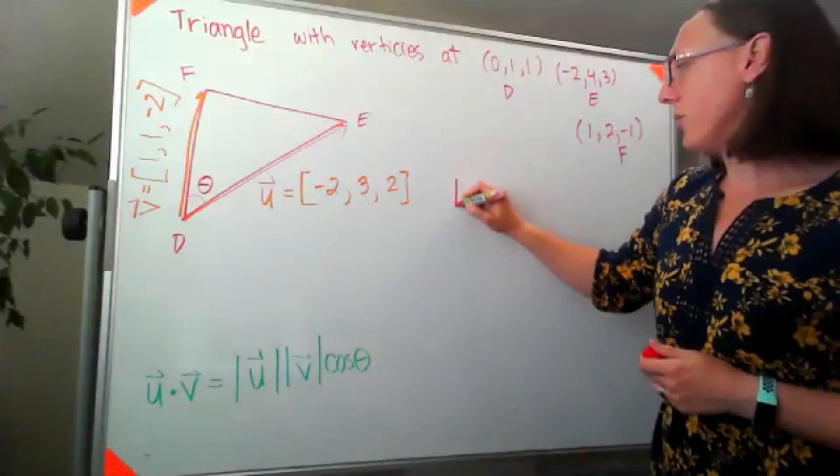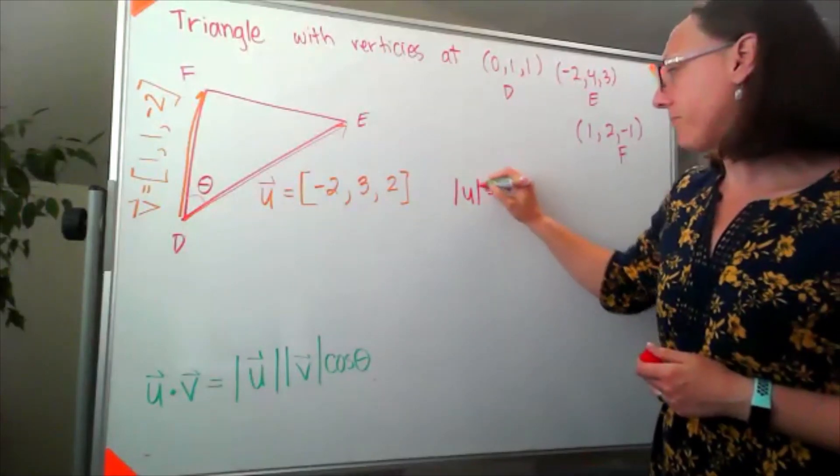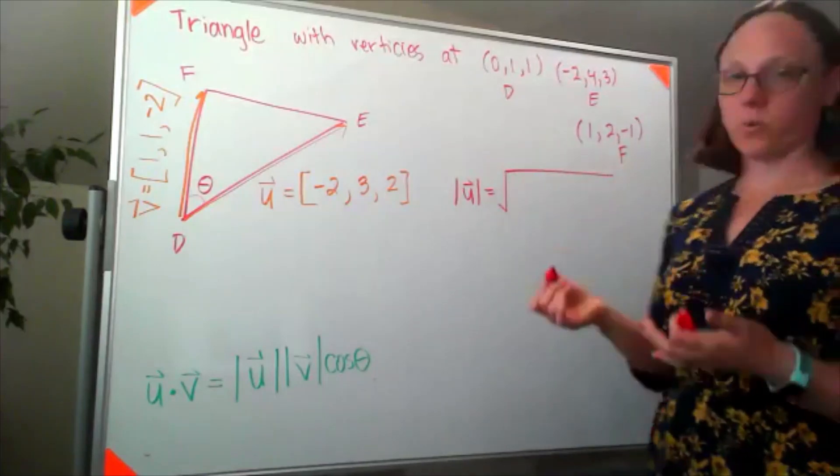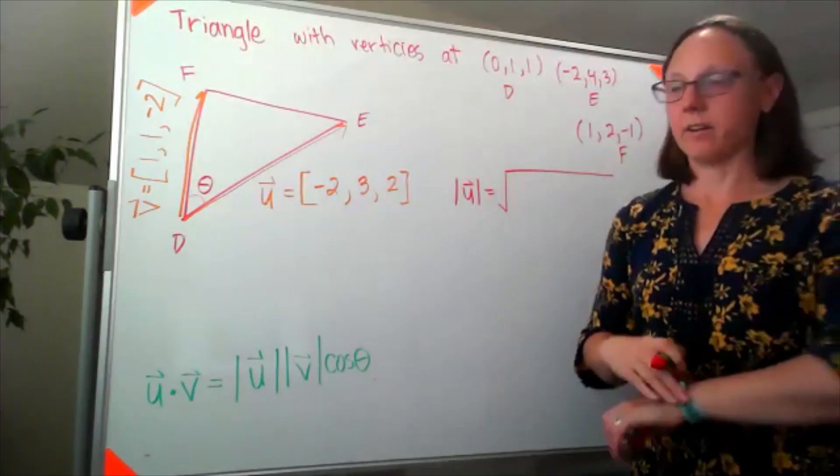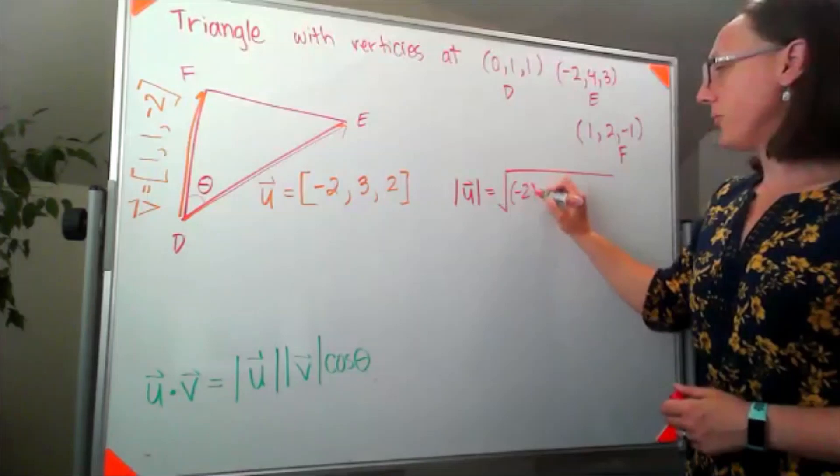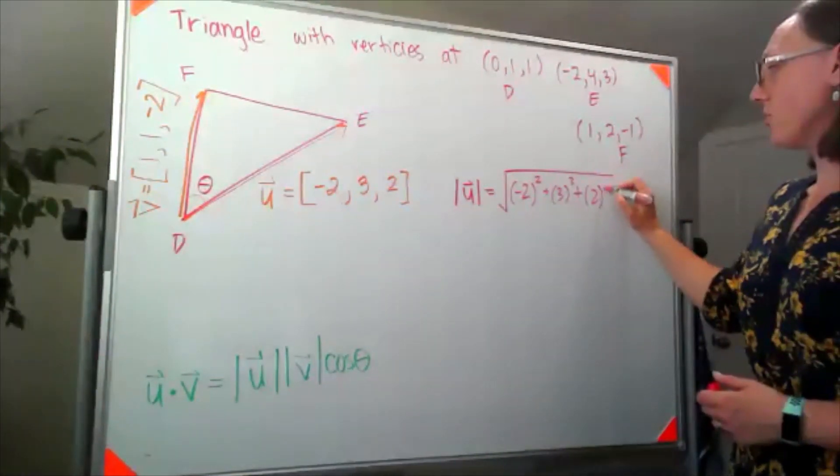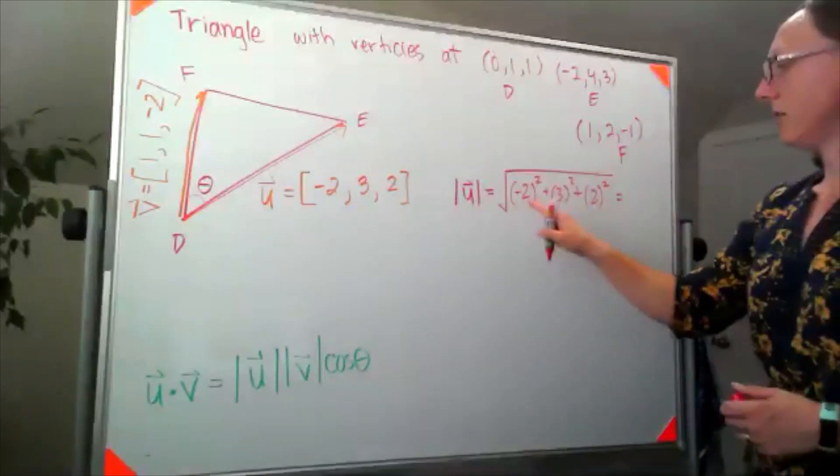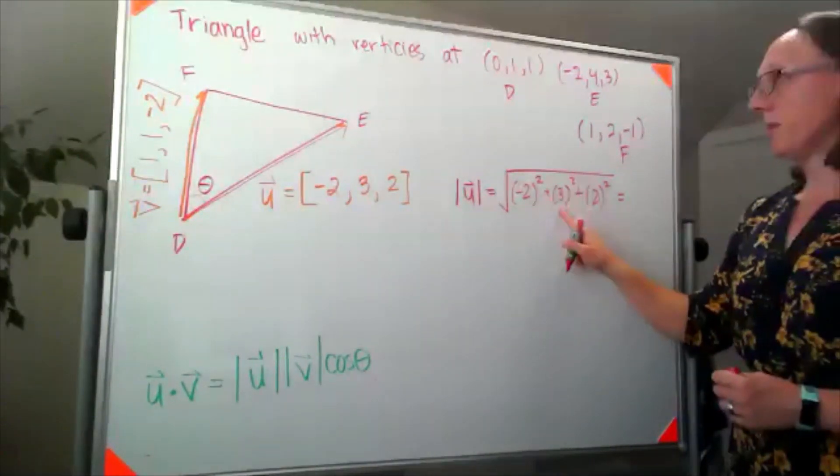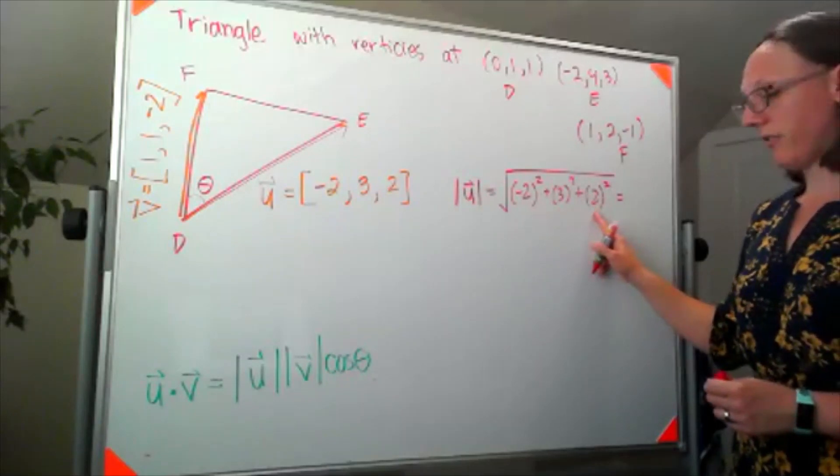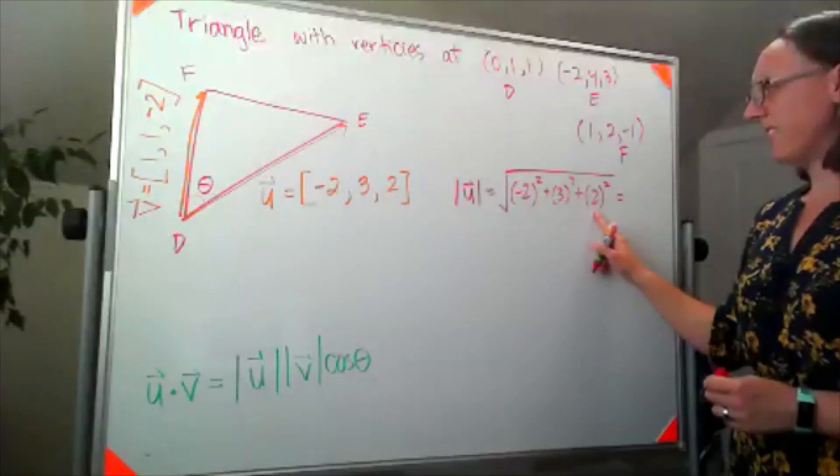So my magnitude of u is going to look like the square root of each component squared. So I'll have negative two squared plus three squared plus two squared. Or that's a four plus nine, so I'm at 13 plus another four, so 17.